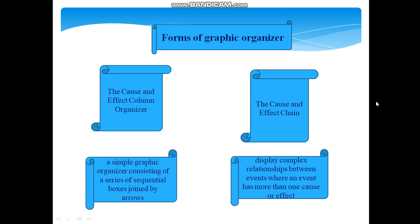Forms of graphic organizer are cause and effect column organizer, the cause and effect chain, a simple graphic organizer consisting of a series of sequential boxes joined by arrows, and display complex relationships between events where an event has more than one cause or effect. Concerning effect graphic organizers, they can be helpful tool to help students to record cause and effect from a reading passage. Displaying this information visually aids students in identifying and analyzing the underlying causes and effects in a series of events or processes. Two forms of graphic organizer can be particularly useful in this role: The cause and effect column organizer and the cause and effect chain.